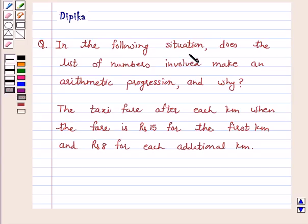Question says, in the following situation, does the list of numbers involved make an arithmetic progression and why?